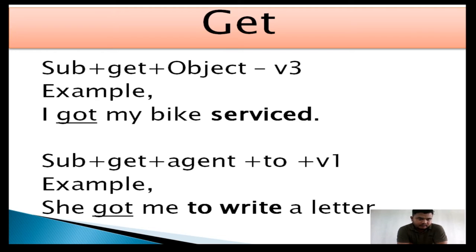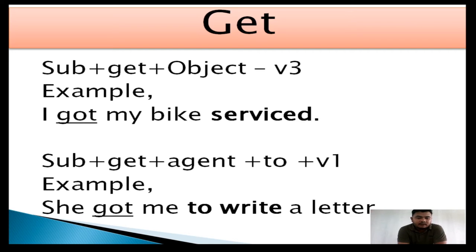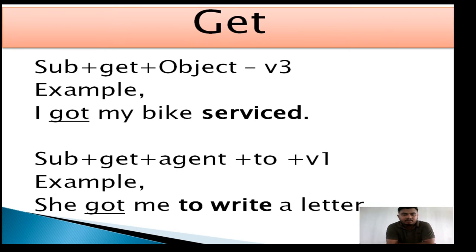Another rule for 'get': Subject + get + agent. If 'get' is followed by an agent — meaning a living person — then the rule is verb 2 + verb 1. For example, in the sentence 'She got me to write,' 'got' is followed by 'me,' which is an agent, a living person. So the verb must be verb 2 + verb 1.